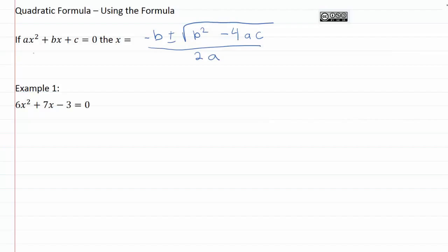The idea here is that if we take the coefficient — the number in front of each of my terms, or the number that just is the last term — then we can plug that in to this equation as a, b, and c, and solve for x. This is an equation we're going to have to use a lot, so it's a really good one to memorize.